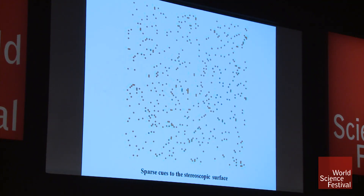Somewhere in our brain, we're developing this sense of a continuous surface, even though the local cues are only sparse dots.